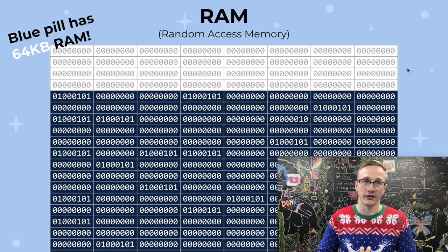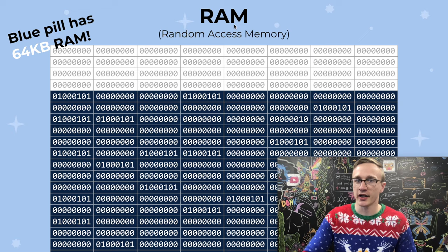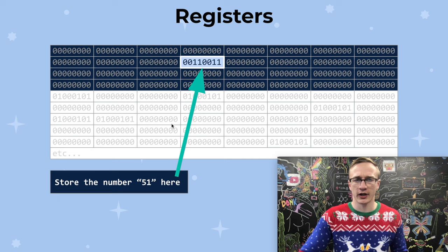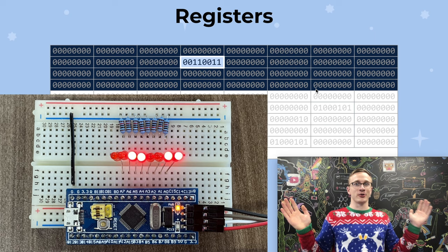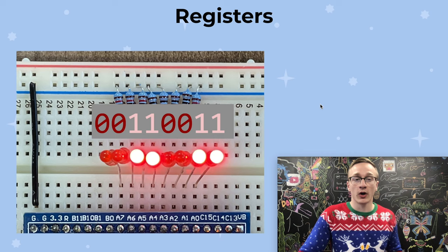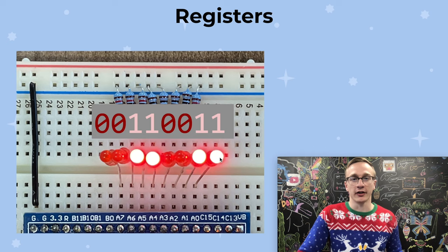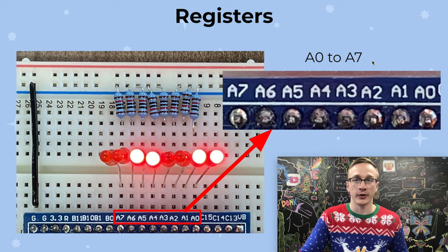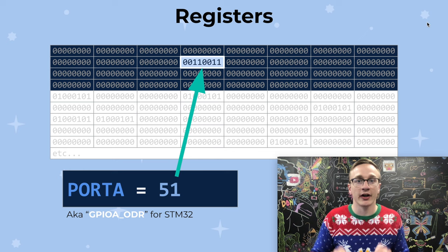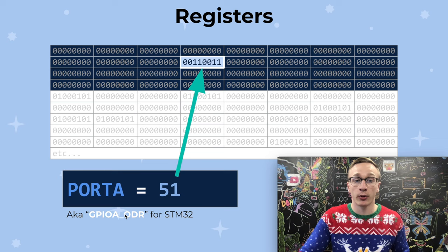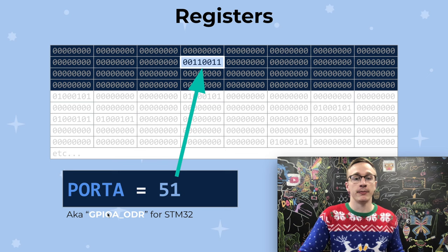Not all of the memory is just generic dumping grounds. You have a ton of memory to work with — for example, the Blue Pill has 64 kilobytes of memory. But what's this stuff at the top that's kind of set aside? These are special locations in memory called registers. So what would happen if we took the number 51 and stored it into this memory address? My microcontroller lit up! If you have a keen eye, you might notice that the number 51, which is 00110011, is the same pattern of the LEDs that lit up. The pin names are A0 through A7, with A0 on the right and A7 on the left. What we just discovered is some location in memory that controls the output pins — sometimes referred to as port A, which controls all the A pins. In STM32, it's referred to as GPIOA ODR, which stands for the Output Data Register.